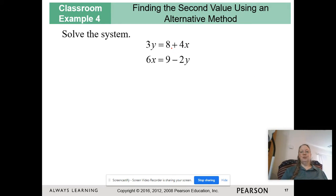So in this problem, we're going to use the elimination method, so we're going to put it in standard form. So I'm going to subtract my 4x and add 2y.